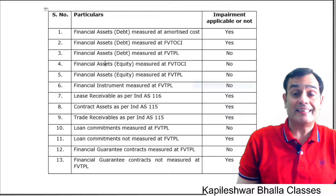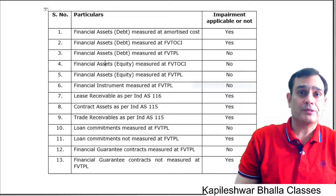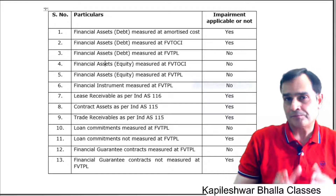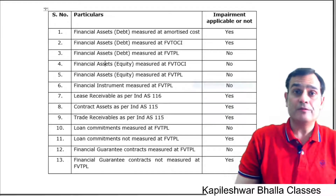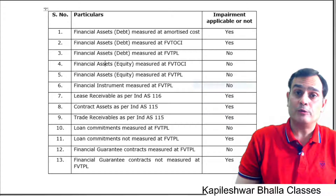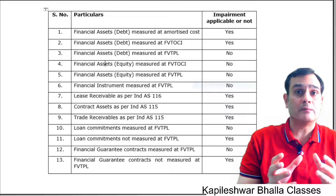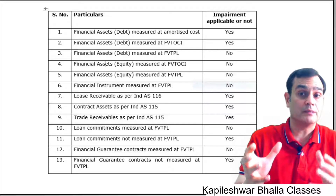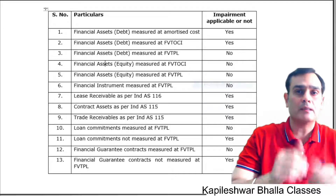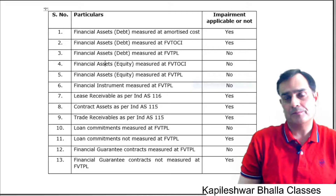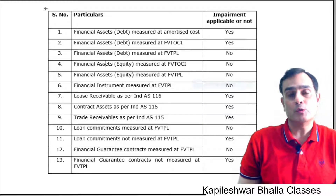For point number two, when a financial asset debt is measured at fair value through OCI, fair value changes are taken to other comprehensive income. But the impairment loss is supposed to be taken to P&L. So even though you are measuring at fair value through OCI, the impairment loss is parked in other comprehensive income and needs to be reclassified — recycled — to the profit and loss account. Therefore, impairment testing is applicable to financial asset debt measured at OCI.